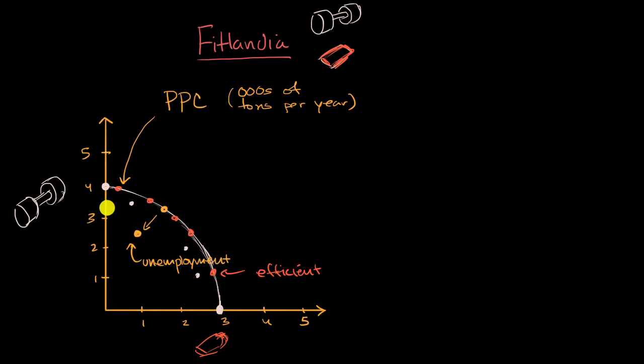or maybe you lose some territory to another country, then you have fewer resources with which to produce. And so you could end up in a scenario where your production possibilities frontier contracts to something, contracts to maybe something like this. And so this movement of the production possibilities curve, this would happen if you have contracting resources.